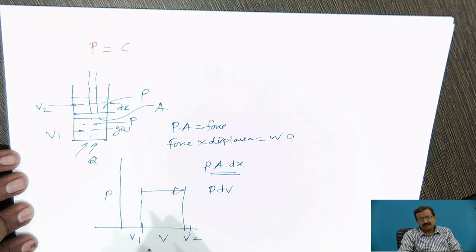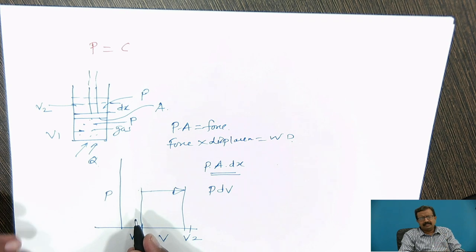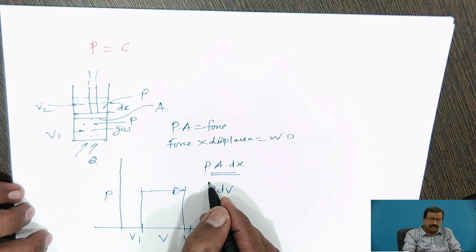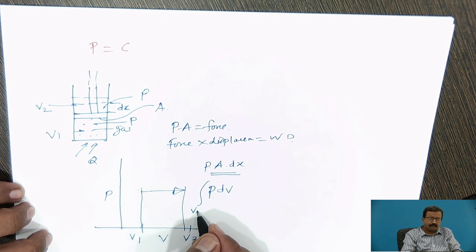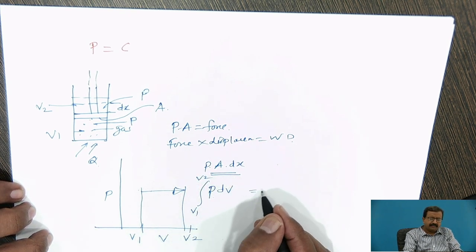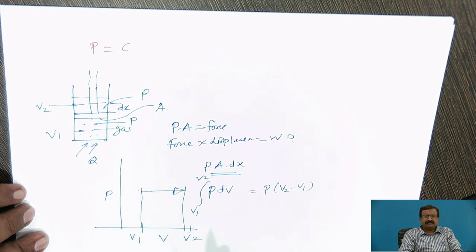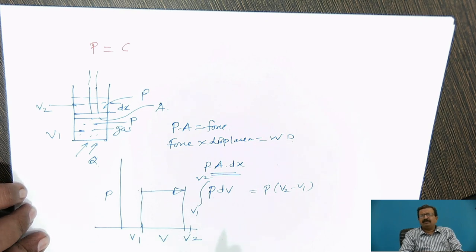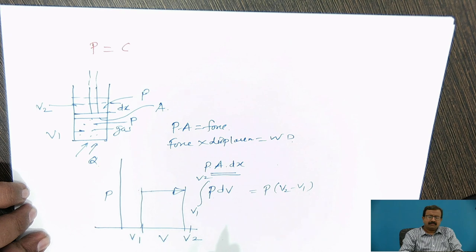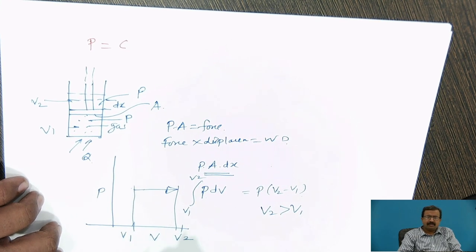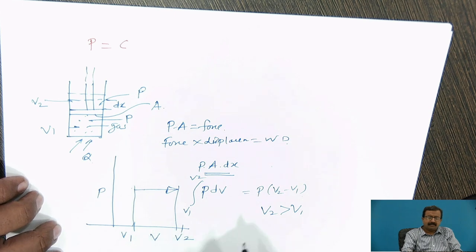And this force into displacement equals work done. So what is my force? p into A. What is displacement? dx. Now I club this. So it is p into small change in volume. Now there comes calculus. When I am infinitesimally increasing the volume, what happens? This is my work done for a small change. If I integrate it from v1 to v2, I will get this as p into v2 minus v1. Now the question is, whether it is work obtained or work supplied to the system. Because if v2 is greater than v1, the term is positive. So this system is giving positive work.